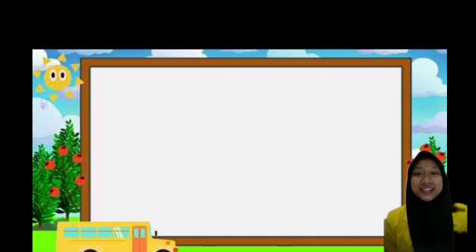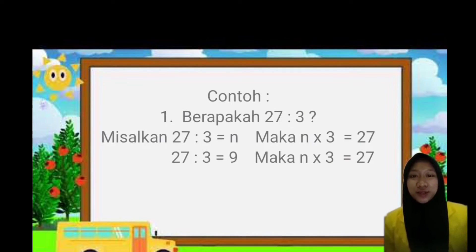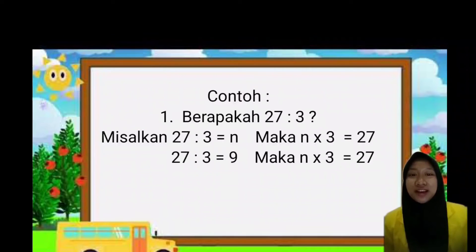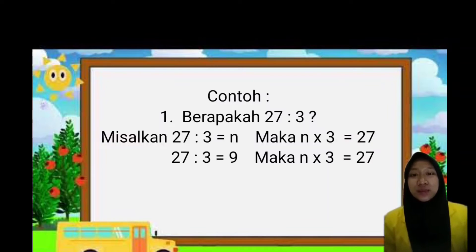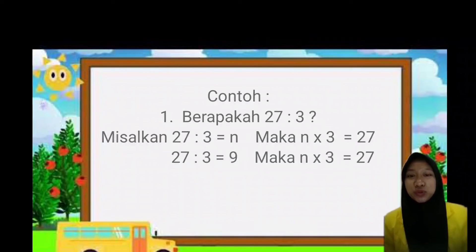Untuk memperjelas dari pernyataan tersebut, saya akan membedaikan sebuah soal. Soal itu: berapakah 27 dibagi 3? Misalkan 27 dibagi 3 sama dengan N, maka N kali 3 sama dengan 27. 27 dibagi 3 sama dengan 9, maka dapat kita ketahui bahwa N dikali 3 sama dengan 27.